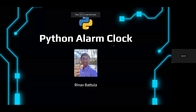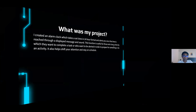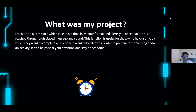All right. So this was my project — I decided to do the alarm clock. The alarm clock takes a set time in 24-hour format and once the time is reached it alerts you using a displayed message and sound. This is usable in real life for those who want to complete an activity by a certain time or be alerted to prepare for something — it can also help shift attention, stay on schedule, and keep track of time as an active timekeeper with datetime and time modules.